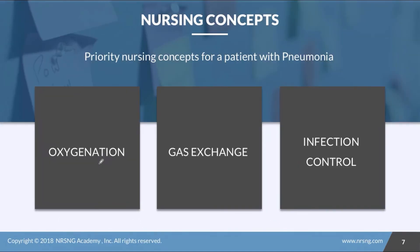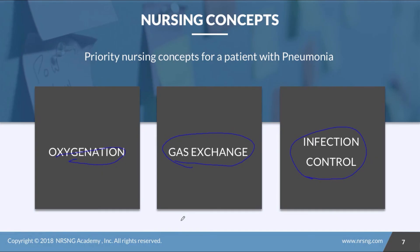The main nursing priorities for the pneumonia patient are fairly obvious: oxygenation, gas exchange, and infection control. We pay attention to oxygenation and gas exchange because the alveoli are filled with fluid, and we're monitoring for ARDS. Infection control is a top priority to prevent pneumonia in the first place, to prevent it from spreading, and to treat current infection.